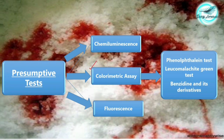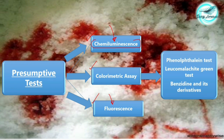The first is the colorimetric assay, the second is chemiluminescence, and the third is the fluorescence assay. If you've watched my previous video series about blood stain pattern analysis, I explained these very clearly — they are used for identification of latent blood stains. If you haven't watched that video, please go to the channel and watch it. Now let's talk about the colorimetric assay.